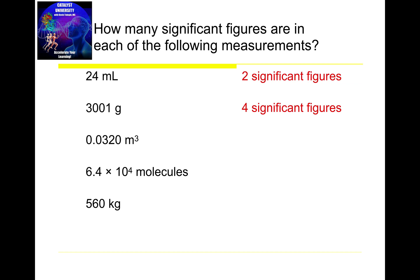Here's a challenging one: 0.0320 cubic meters. The first step is to draw a box around all non-zero digits — there's a 3 and a 2 right next to each other. But there's a decimal point, so I then draw a box around all the zeros that trail the first box. There's only one trailing zero after the 3 and 2. So in total I have the 3, the 2, and the last zero — three significant digits.